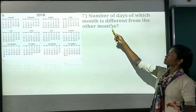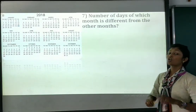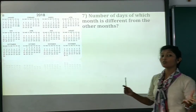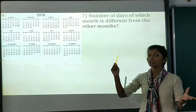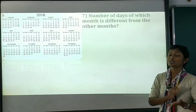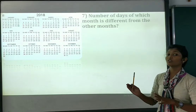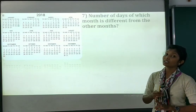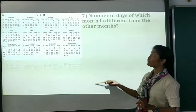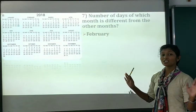Next question is about number of days. Which month is different from the other months? February — February is the only month with just 28 or 29 days; it doesn't have 30 or 31 days. So February is the unique month.